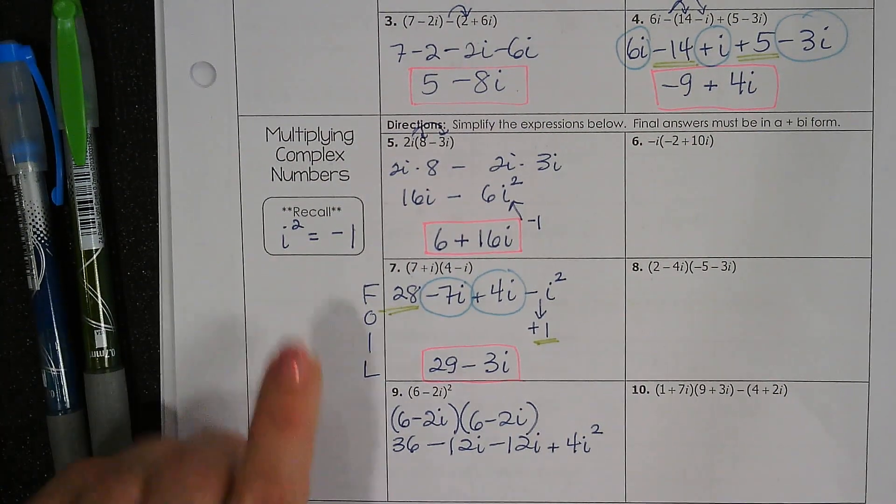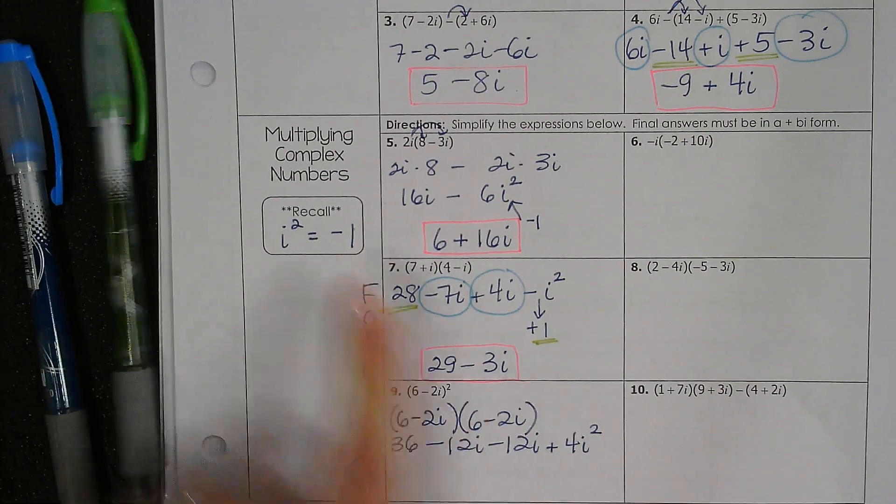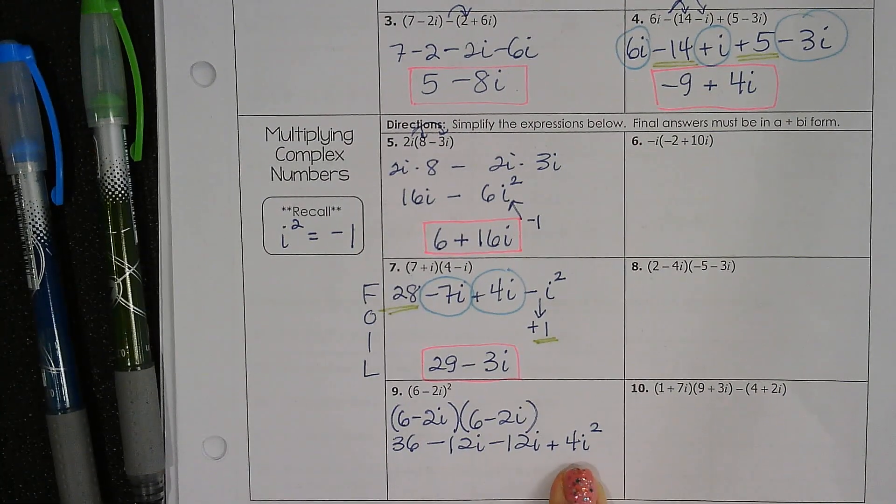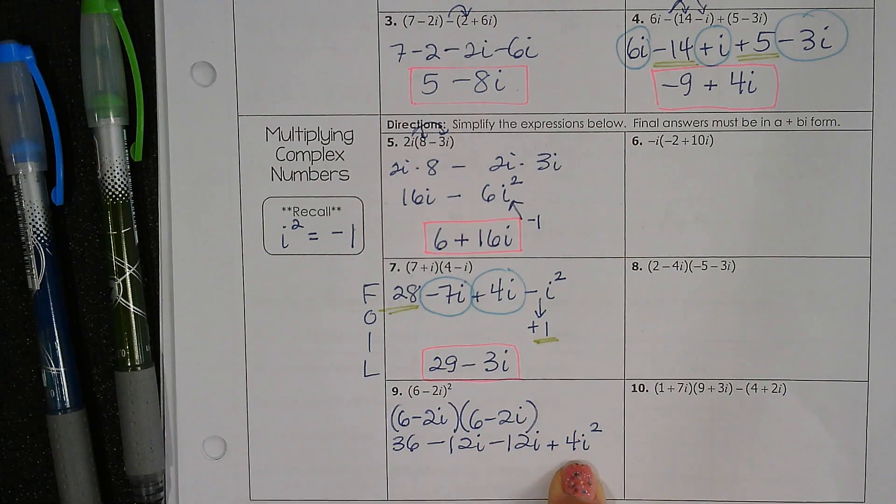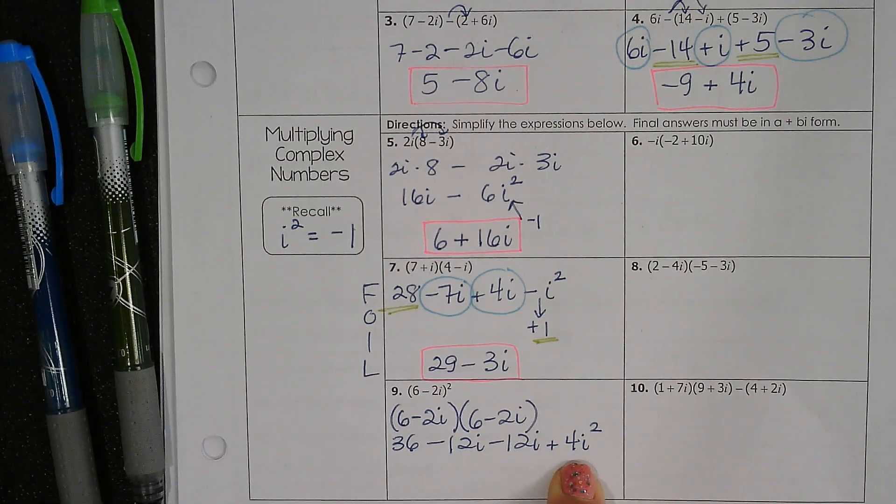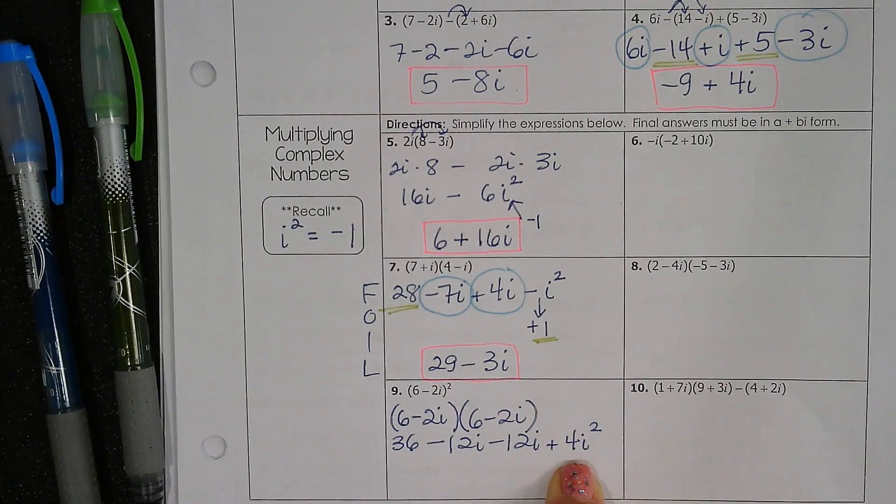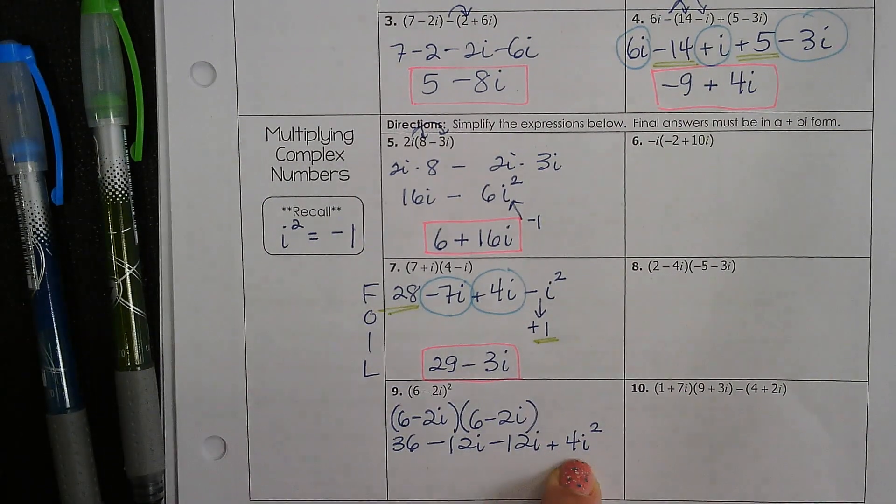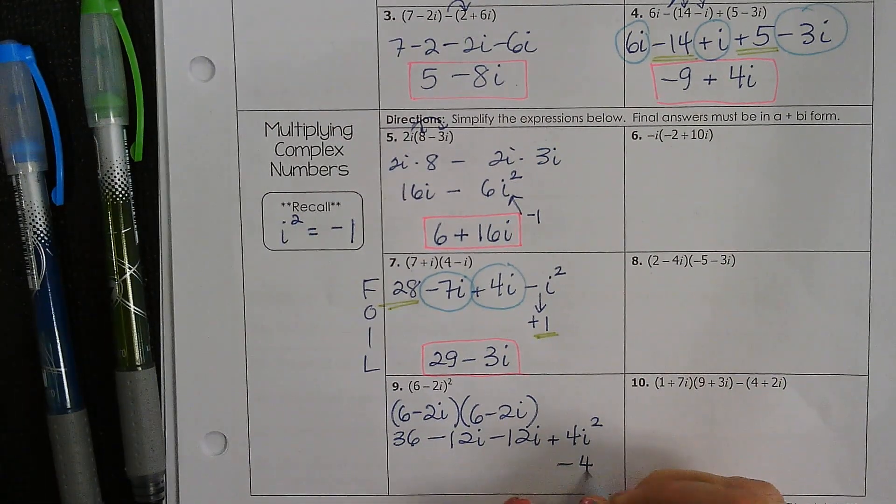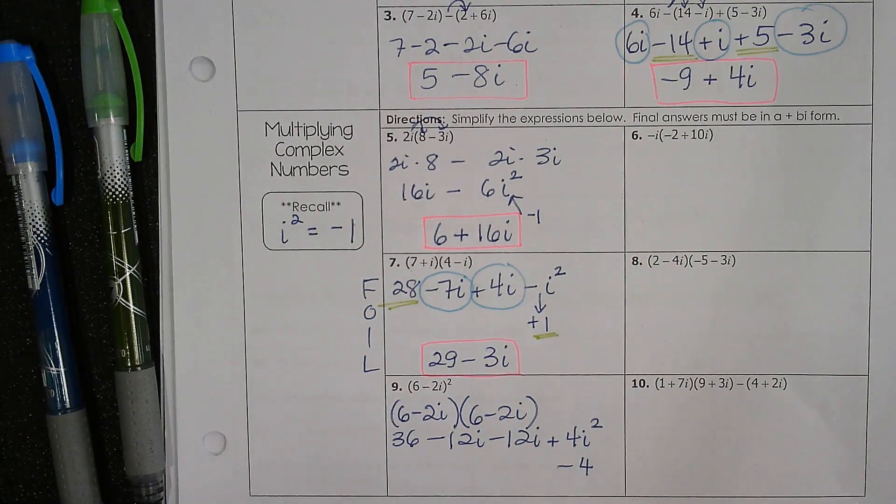And this is where we remember that i squared is negative 1. So you're going to change this to what? 4i squared, you're going to change to 4 times negative 1. So negative 4. We're going to change that to negative 4. Everybody got that?